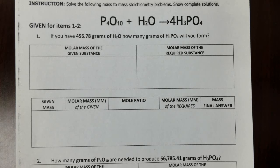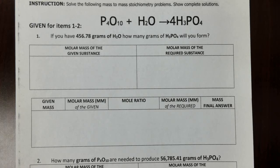Let's inspect whether the equation is balanced. We have 4 Ps on the left, and on the right side the coefficient is 4 and P is 1, so 4 times 1 equals 4 — P is balanced. For oxygen: we have 10 on the left plus 1 equals 11, but on the right side that's 4 times 4 equals 16, so oxygen is not balanced.